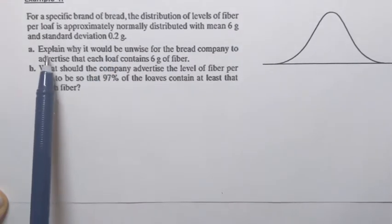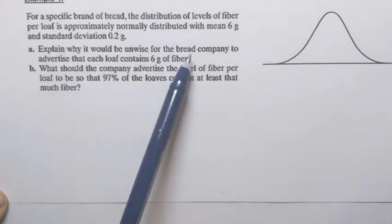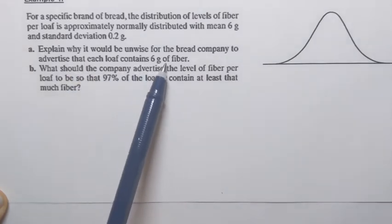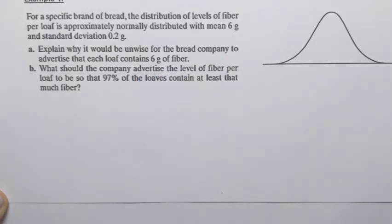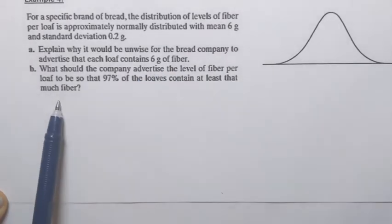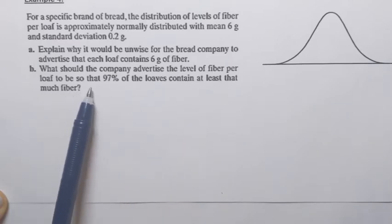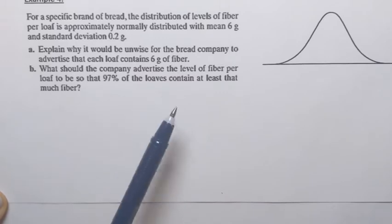Part one of this question is to explain why it would be unwise for the bread company to advertise that each loaf contains 6 grams of fiber. And the second part says what should the company advertise the level of fiber per loaf to be so that 97% of the loaves contain at least that much fiber. Let's go back to part one.